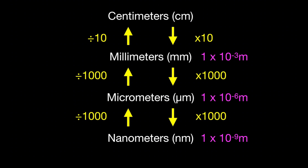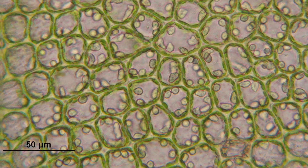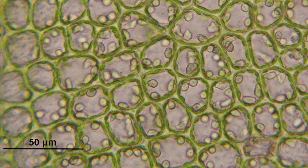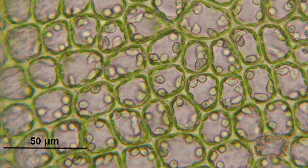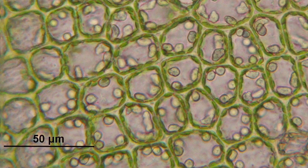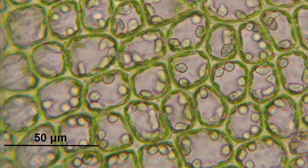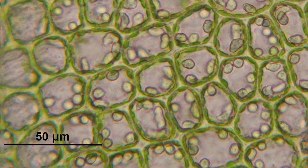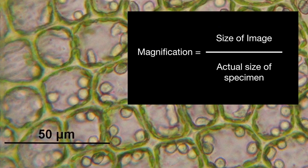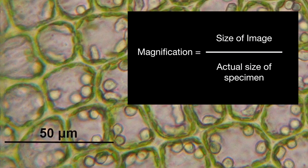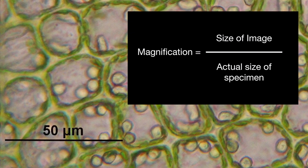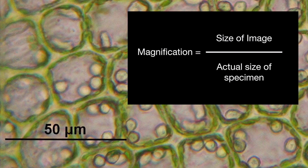We can use these units when calculating magnification of cells or cell structures. It is possible that you'll see a scale bar on the image — as visible here on the bottom left-hand side. The number on the scale bar, in this case 50 micrometers, tells you the actual length that bar represents. In our formula, 50 micrometers would be the actual size of the specimen. We then use a ruler to measure the length of the scale bar on the image to find the image size and calculate magnification.